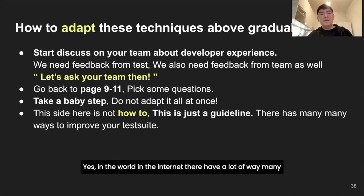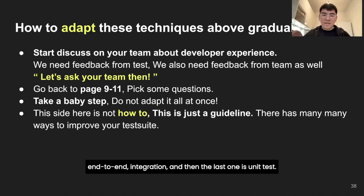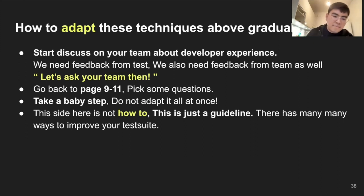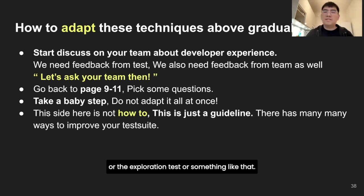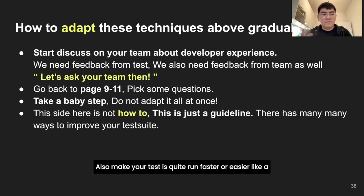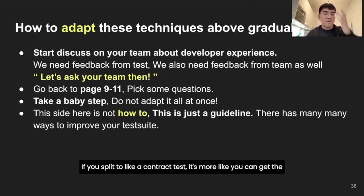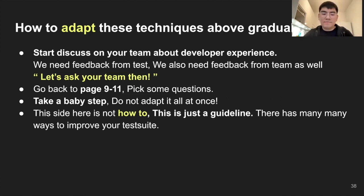This slide is not a how-to guide but more of a guideline showing possible ways to improve tests. There are many ways to improve tests on the internet. Try to categorize tests as a test pyramid with end-to-end, integration, and unit tests at the base. If unit tests take a lot of time because you have many services, look at contract tests or exploratory tests. There are many ways to make tests run faster and get more confidence. With contract tests, if you're spending time on end-to-end tests, splitting to contract tests can give faster feedback with similar confidence. So let's adapt it - take a baby step.